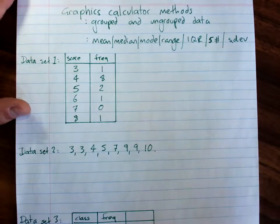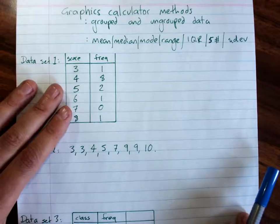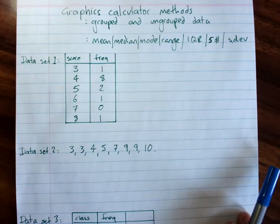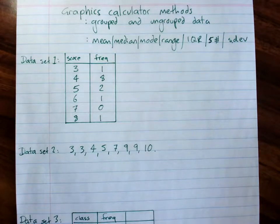Going through graphical calculator methods for data in frequency tables or on its own, for finding the measures of center and spread, the five-number summary, the standard deviation, all these things that we need.